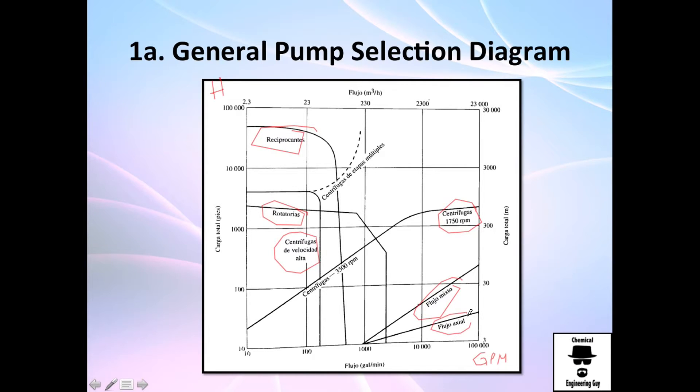As you can see, low head, high volumetric flow rates are axial. High head, low volumetric flow rates are positive displacement. And in between, you can find centrifugal pumps.